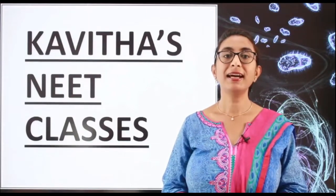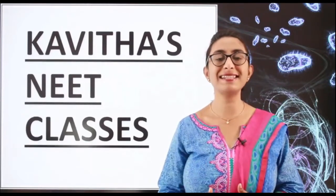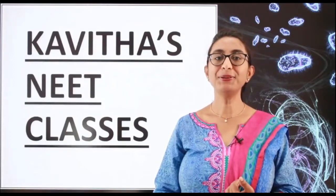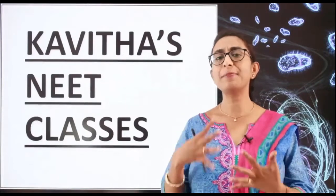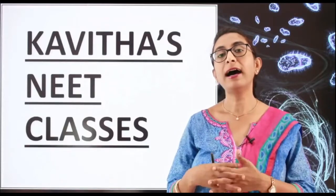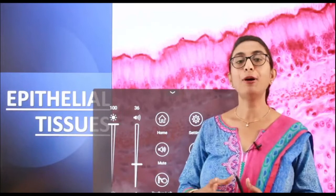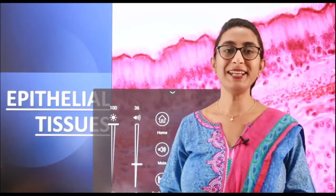Our entire human body, though composed of billions of cells, basically has only four different kinds of tissues: the epithelial tissue, the connective tissue, muscular tissue, and neural tissue. In this part one lecture on human tissues, we will be discussing epithelial tissues. Later lectures will cover connective tissue, muscular tissue, and neural tissue.